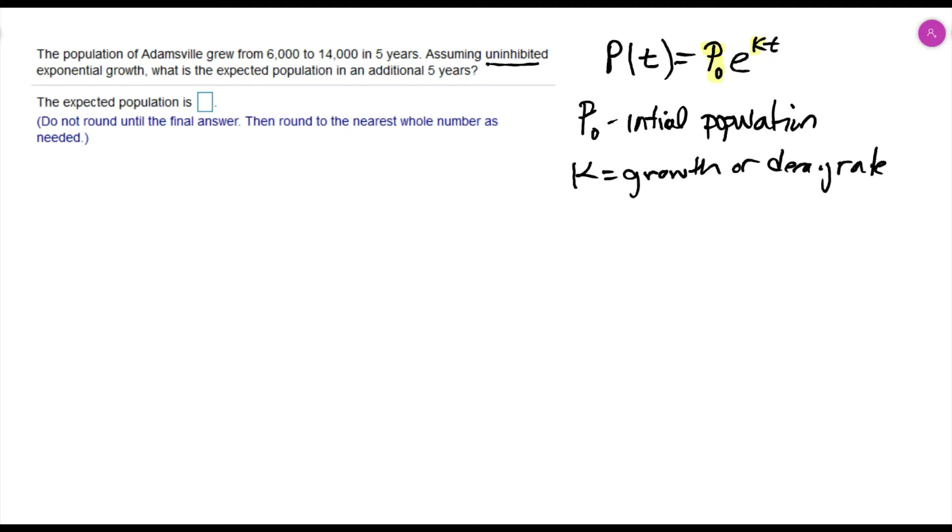Because this population grew from 6,000 to 14,000, I know it's going to be growth and I know that value is going to be positive.